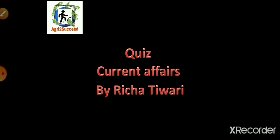The first question is: how much rupees was allocated under Per Drop More Crops? Options are ₹4000 crore, ₹5000 crore, ₹6000 crore, and ₹7000 crore. The correct answer is ₹4000 crore.